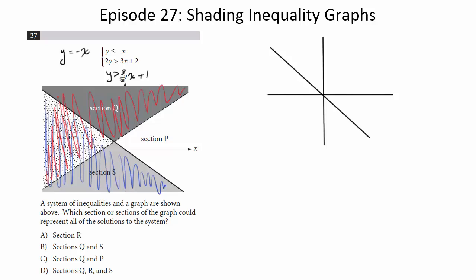We want to know what section or sections of the graph could represent all of the solutions to the system. So we want the points that solve both inequalities, that work for both. In other words, we want the section or sections that has the overlap, that whose shaded regions overlap.